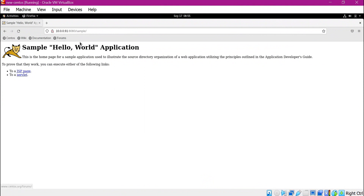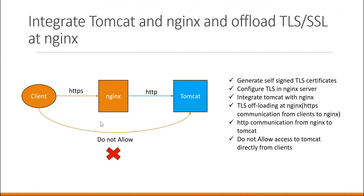Our goal is to access this application through the reverse proxy, which is Nginx. We have configured TLS in Nginx and deployed the sample application in Tomcat, and verified direct HTTP access to Tomcat from the client. Now we need to integrate Nginx and Tomcat so that direct communication from client to Tomcat is not allowed and clients must access the application through Nginx.